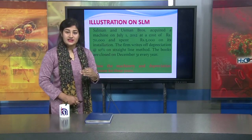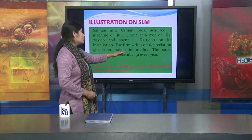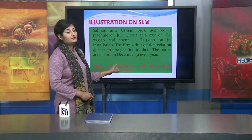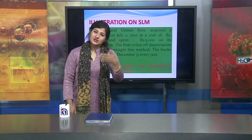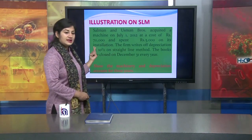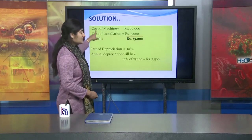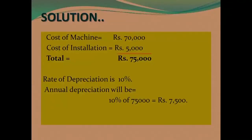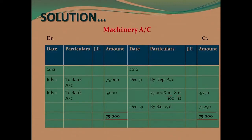The books are closed on 31st December every year — we must always read this carefully to know when the accounting year ends. We have to show the machinery account and depreciation account for three years. The basic details are: cost of machine 70,000, installation cost 5,000, so total cost is 75,000. Rate of depreciation is 10 percent, so annual depreciation will be 10 percent of 75,000, which is 7,500.